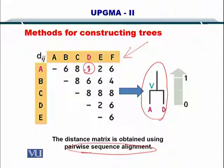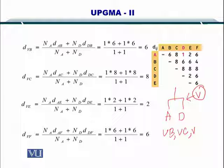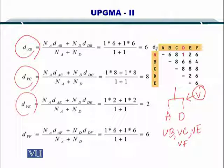Next you created a cluster between A and D which you called V. Then you computed the distance between V and B, V and C, V and E, and V and F. Here is the formula that we use to compute the distance. So the distances came out to be 6, 8, 2, and 6.